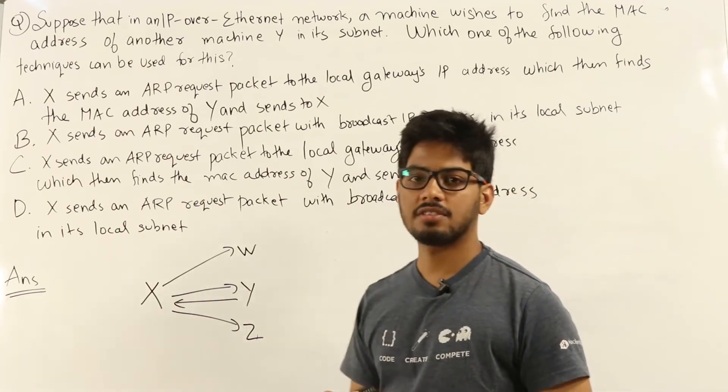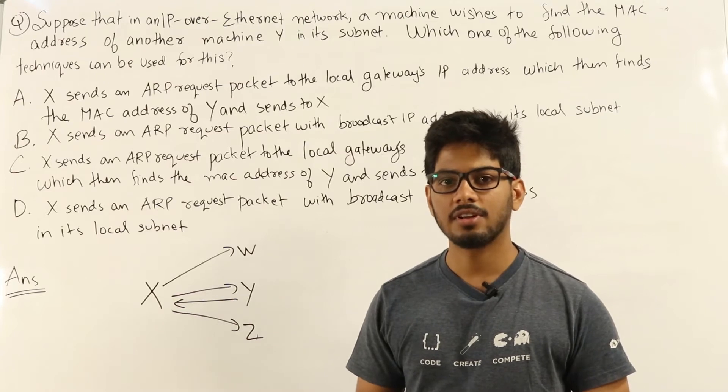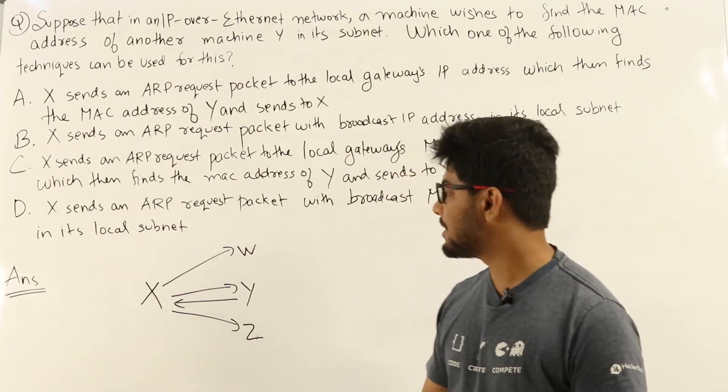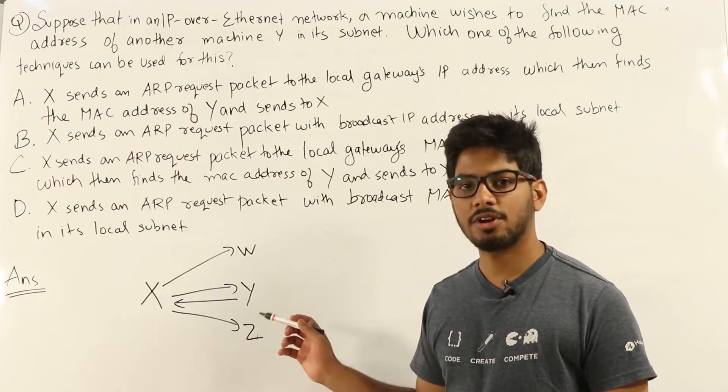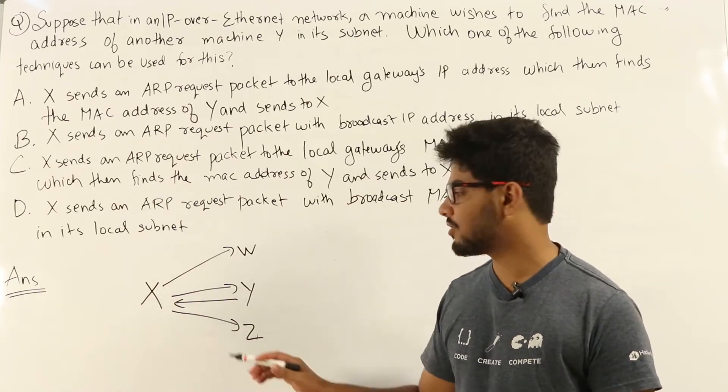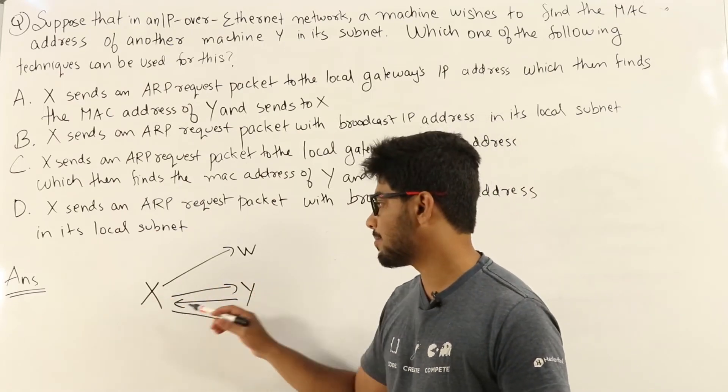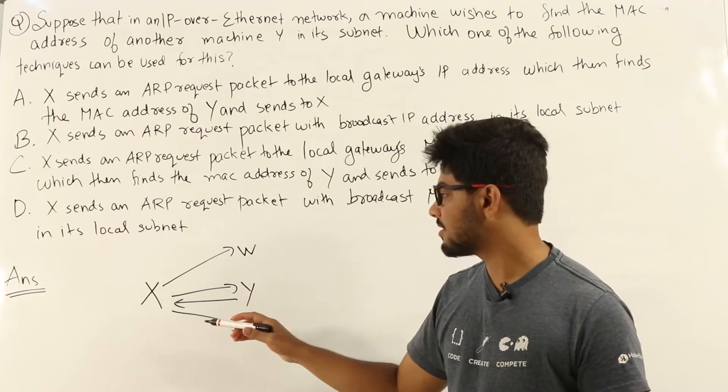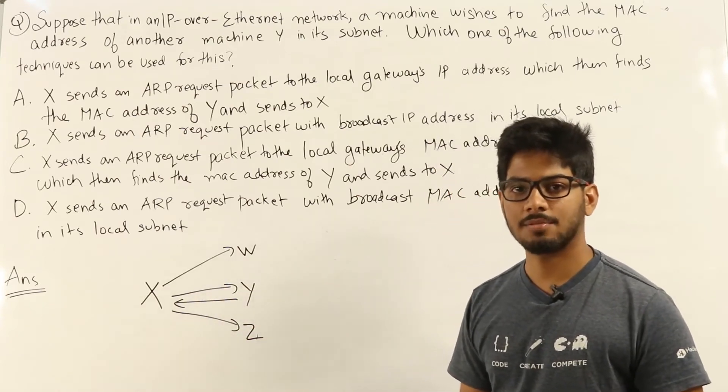So this is a question from computer networks regarding ARP or address resolution protocol. ARP is used when some machine X knows the IP address of another machine Y in its subnet but it doesn't know its MAC address. In order to send packets to a machine directly in the local subnet, X needs to know the MAC address of Y. But currently it doesn't know the MAC address of Y. So in order to get that, it uses a protocol called ARP within its local subnet.